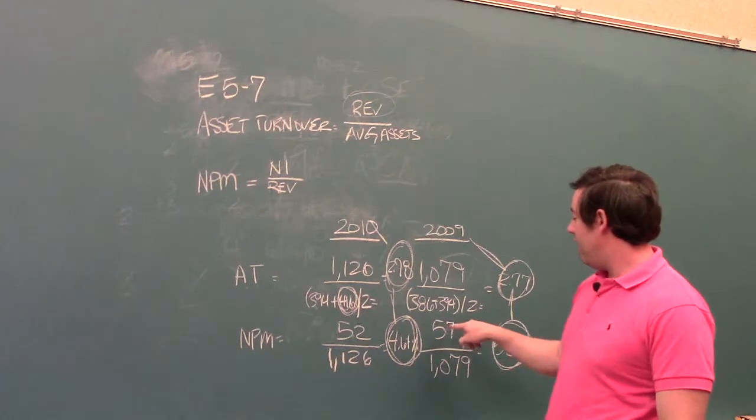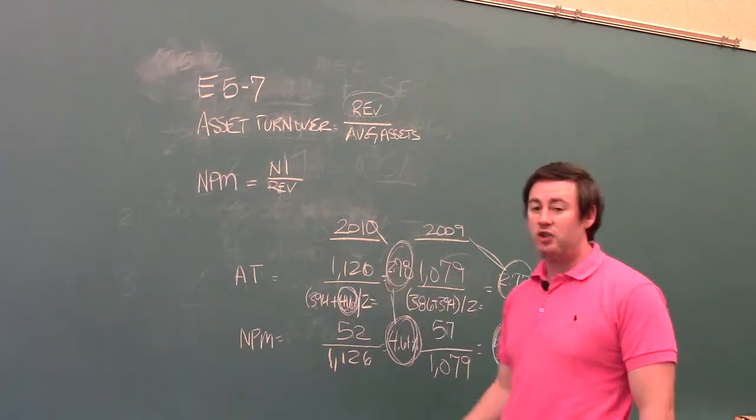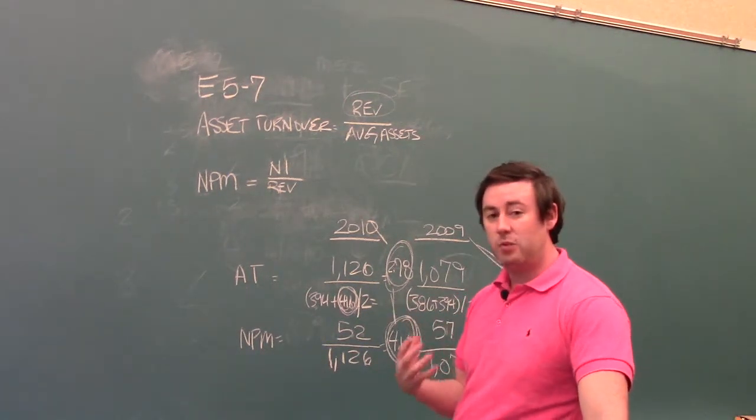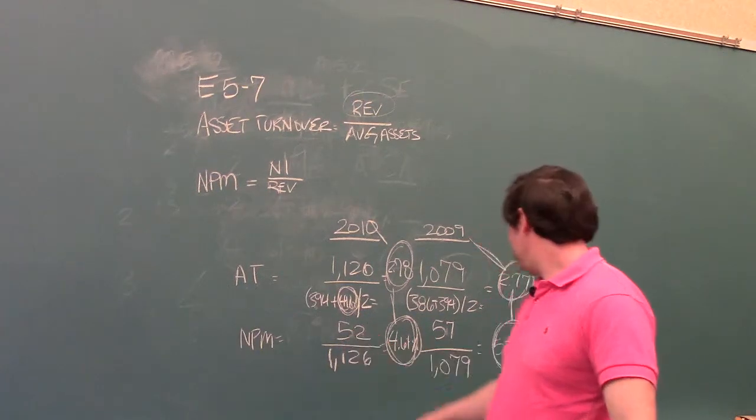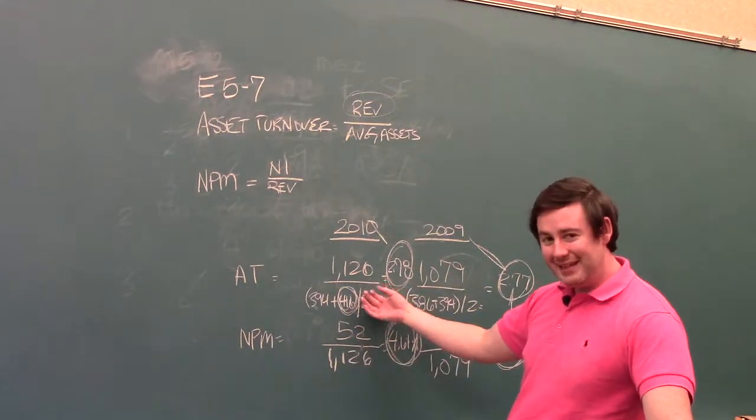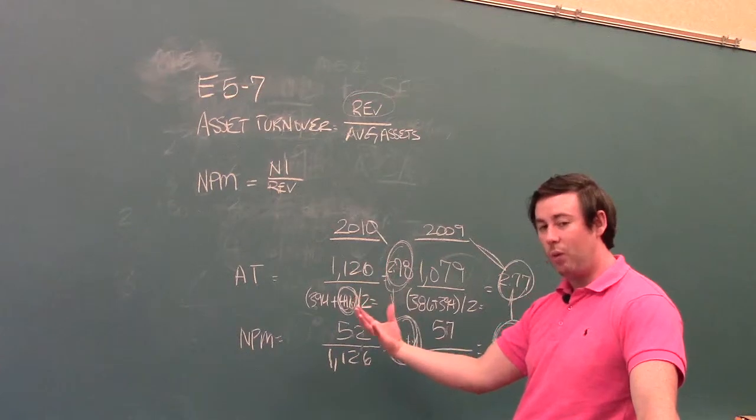We know that part of this drop in income, because notice the income has dropped from 57 to 52, we know that part of this drop has to be due to depreciation expense. As we use up the assets, we're going to record depreciation expense. Therefore, part of this drop has to be due to that. We noticed that revenue has actually increased in 2010, and that makes sense because we use more assets now. Assets should generate us more revenue.